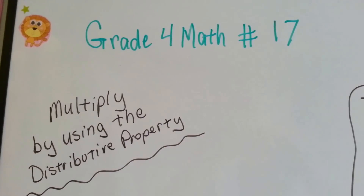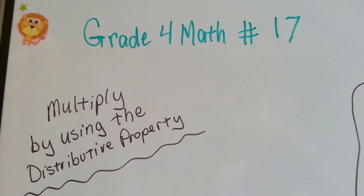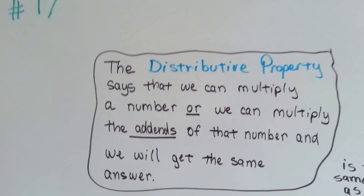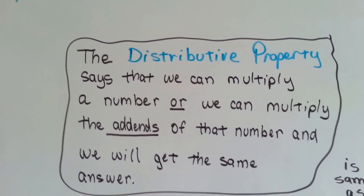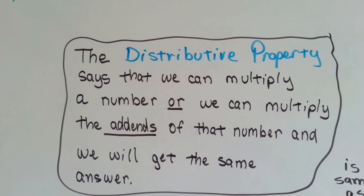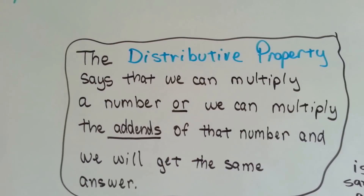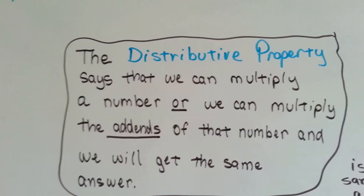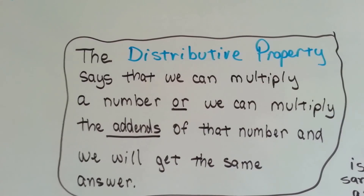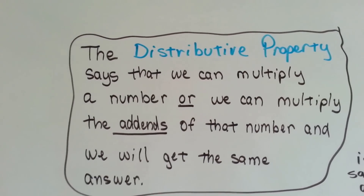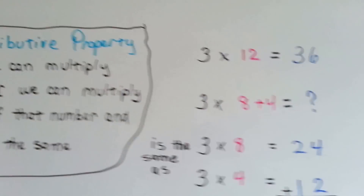Grade 4 math number 17, multiply by using the distributive property. Before we start, let's make sure we know what that means — distributive property. It says that we can multiply a number, or we can multiply the addends of that number, and we'll get the same answer.